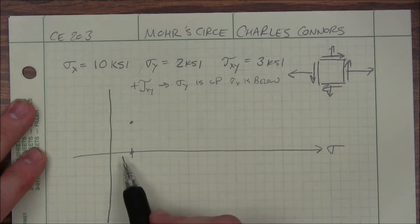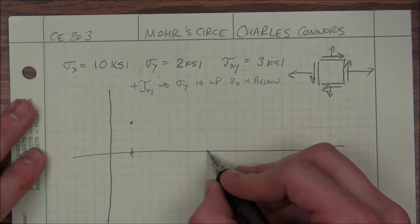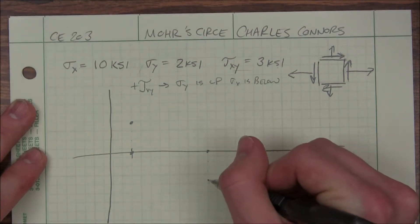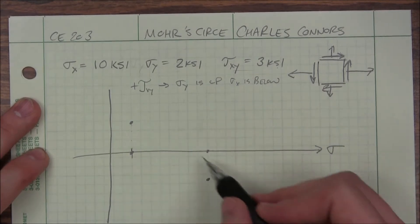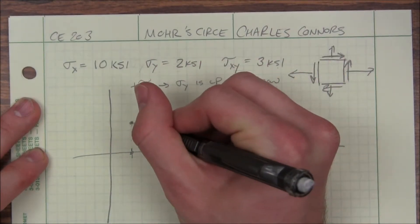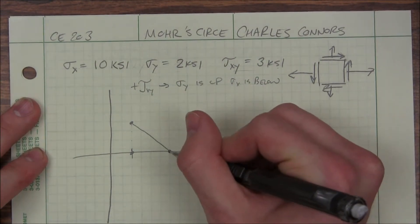So I'll go to 10, 2, 4, 6, 8, 10, and I go below the axis. 1, 2, 3. Alright, so I just plotted these two points here, and I connect them, get the center of my circle.